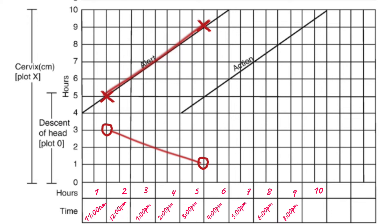If the patient came at 11 a.m. with 5 cm dilation and at 3 p.m. cervical dilation is still only 6 cm, we are moving toward the action line, which is bad — it means labor is not progressing. We need to act fast by arranging for emergency cesarean section.